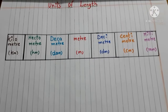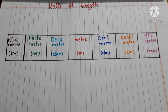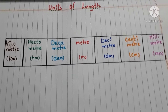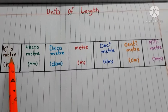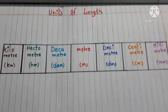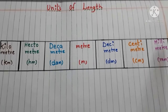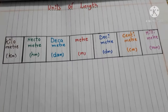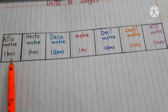This table is very important to convert length from one unit to another. Here we have to remember two important points: whenever we want to convert a higher unit to a lower unit, we multiply; whenever we want to convert a lower unit to a higher unit, we divide.